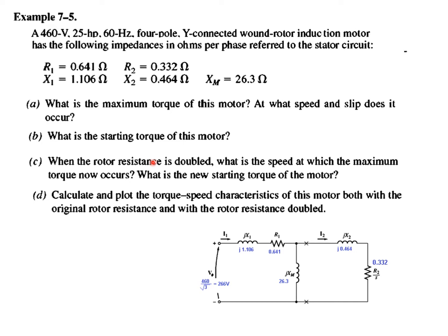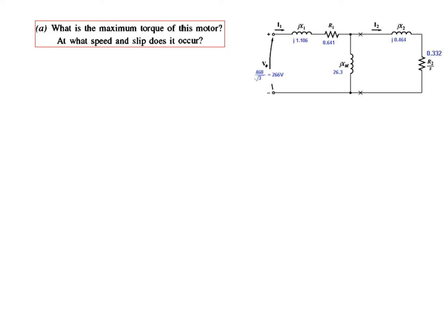The question has four parts. Part A: what is the maximum torque of this motor, and at what speed and slip does it occur? Part B: what is the starting torque? Part C: when the rotor resistance is doubled, calculate two parameters. And finally, Part D: plot the torque-speed graph. Let's start with question 1A.